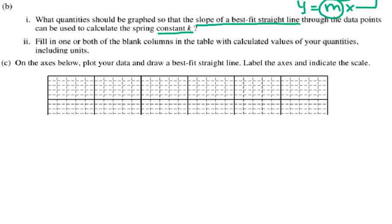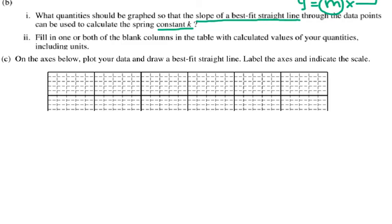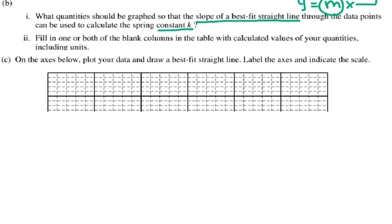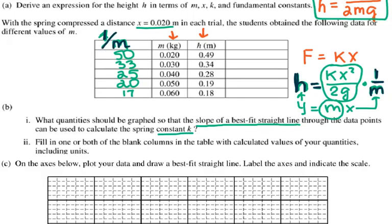Now I've calculated 1 over m values. And fill in both blank columns in the table with calculated values of your quantities. So we fill in the table as they ask for the second part. I can use h and 1 over m to graph my graph now. I'm going to pause it and graph the graph.